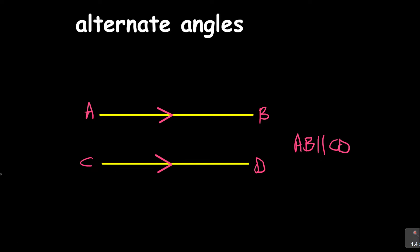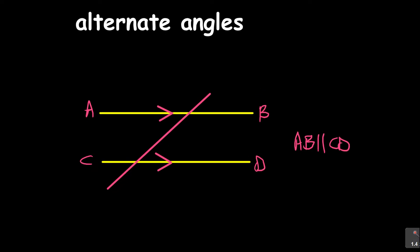So now if we introduce a transversal line like that, then we come up with what we call alternate angles. Now where are the alternate angles being formed? Now look at this — take a look at this. If I have, for example, focus on this, and that, and that — you see that. Whenever I'm talking about alternate angles, that is what I'm bringing to attention. You are looking for a shape that is in the form of Z.